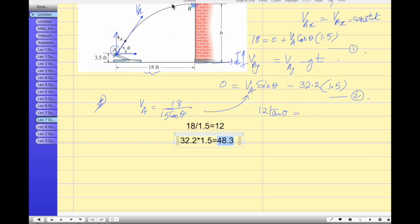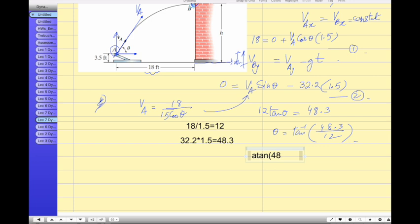Now 48.3. Now we have to find out theta tangent inverse. 48.3 divided by 12. So let's do the math for this one. So I got 76 degrees, the angle of release. Do you get the same? Can you verify from your calculator and help your professor?